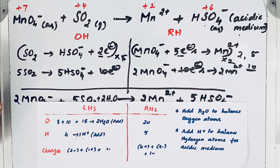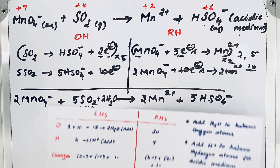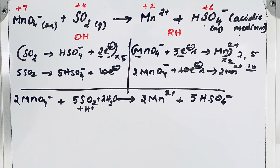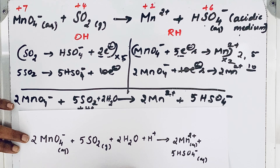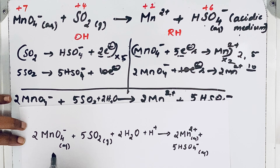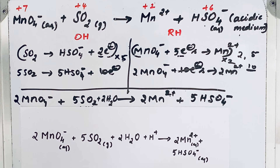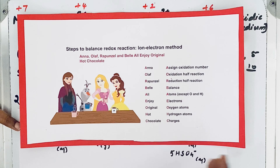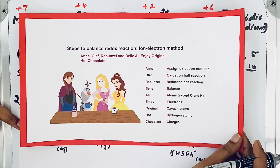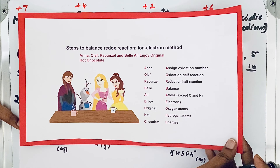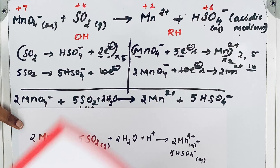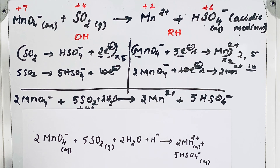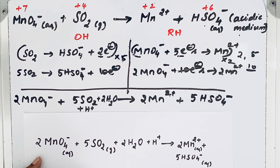Both the left-hand side and right-hand side have a charge of 1 minus, so both sides have equal charges. This reaction is perfectly balanced. The balanced equation is confirmed. Let us revisit the mnemonic: Olof, Rafael and Bell all enjoy original hot chocolate. Thanks for watching.